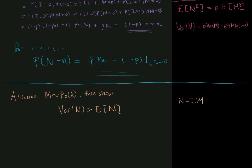Now, we have some results from earlier that tell us that the mean of n is equal to the success probability of i multiplied by the mean of m.